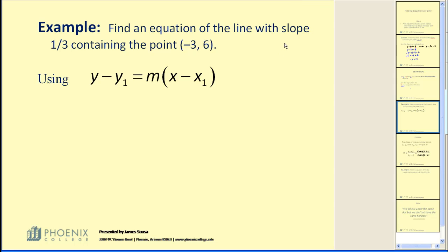Find an equation of the line with slope 1/3 containing the point (-3, 6). We're going to use the point-slope form. Let's do our substitutions. This is our m value or slope, and we're going to use x₁ = -3 and y₁ = 6. So we have y - 6 = 1/3(x + 3).